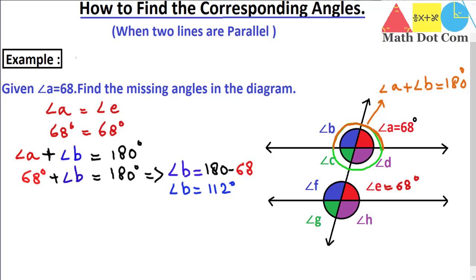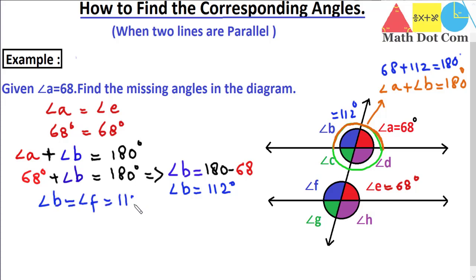So we have found angle B equals 112 degrees. To verify: 68 plus 112 equals 180 degrees — correct. Now, from the diagram, angle B and angle F are corresponding angles occupying the same relative positions, so angle B equals angle F equals 112 degrees. We have now found four of the eight angles.